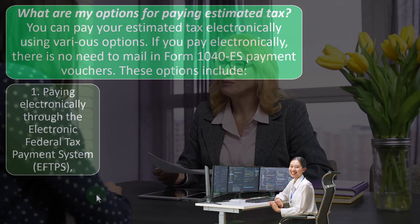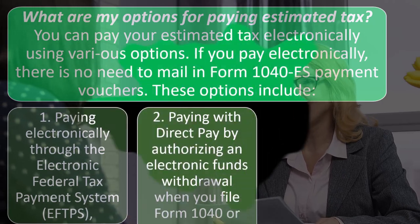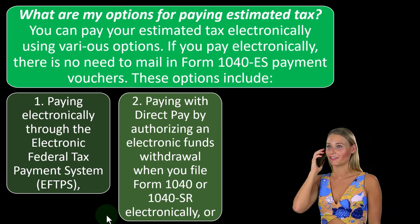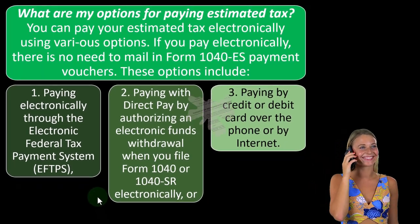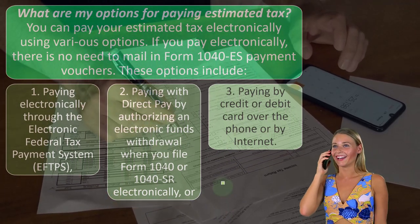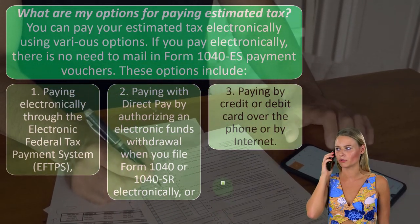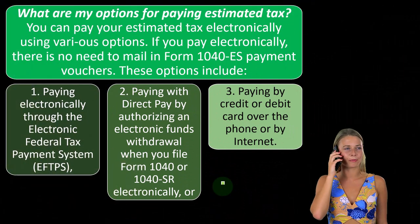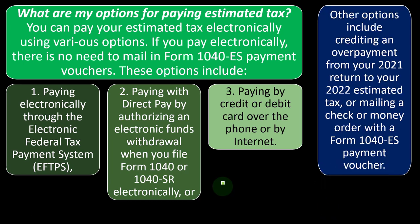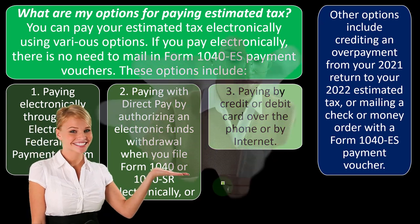How could you pay them? You could pay electronically. One: pay through the Electronic Federal Tax Payment System — the EFTPS. Two: pay with direct pay by authorizing an electronic funds withdrawal when you file Form 1040 or 1040-SR electronically. Three: pay by credit or debit card over the phone or by internet. The IRS doesn't charge you for credit card payments, but the payment processor might. An electronic transfer is probably the cheapest way to pay.